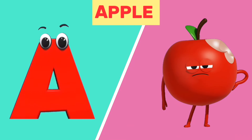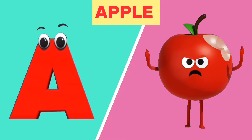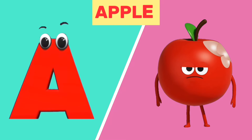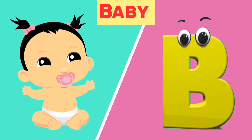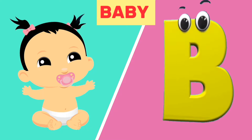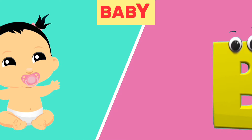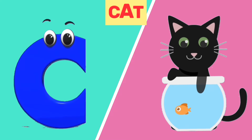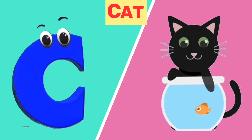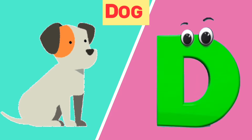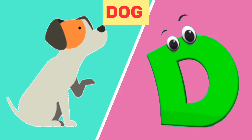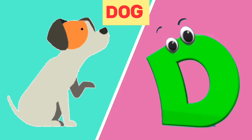A is for apple, a, apple. B is for baby, b, baby. C is for cat, c, cat. D is for dog, d, dog.